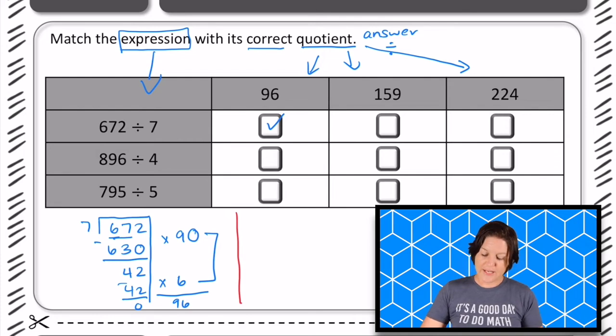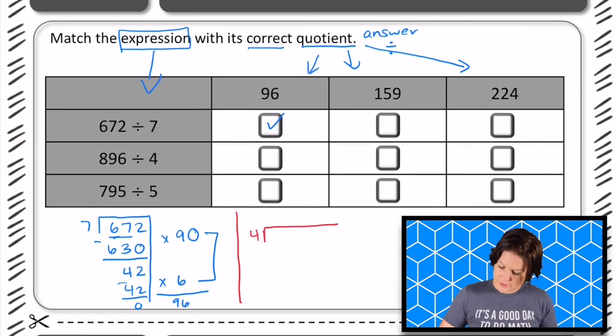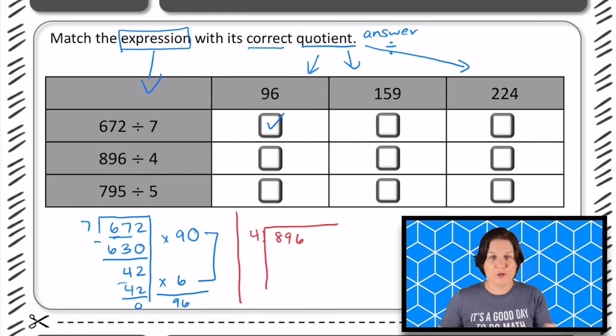All right, for the next one, 896 divided by 4. I'll go ahead and use the area model for this one. It's similar to partial quotients. And it starts like the area model. It's very similar, or sorry, like the partial quotients model. It's very similar, it's just in a different kind of visual.